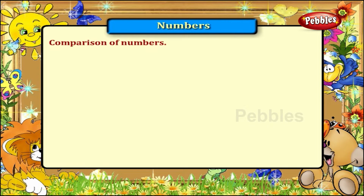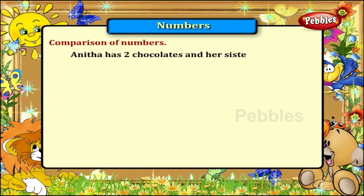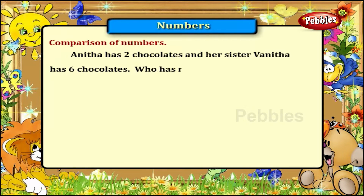Comparison of numbers. Anita has two chocolates and her sister Vanita has six chocolates. Who has more? Let us find out.